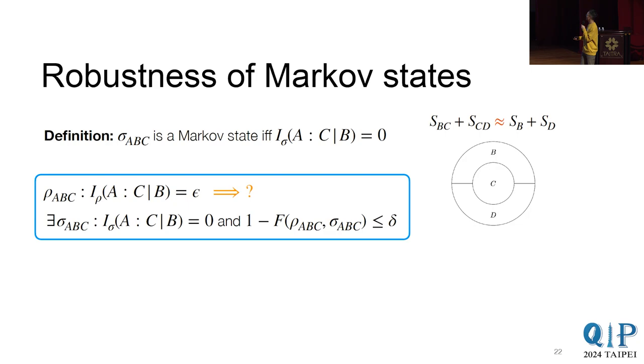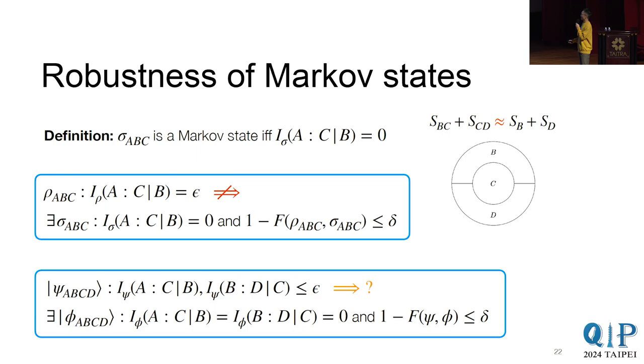So a natural conjecture is that, okay, maybe a state that has conditional mutual information close to zero, you can find another state that's exactly a Markov state and where they're close. If such a thing is true, then maybe one can reduce these problems to the exact case, and then one can solve the problem. Well, but the issue is that people actually know counterexamples for these. So in fact, we propose another variant, which is, instead of just requiring ABC to be Markov, we require both ABC and BCD to be Markov. And the goal is to find such phi.